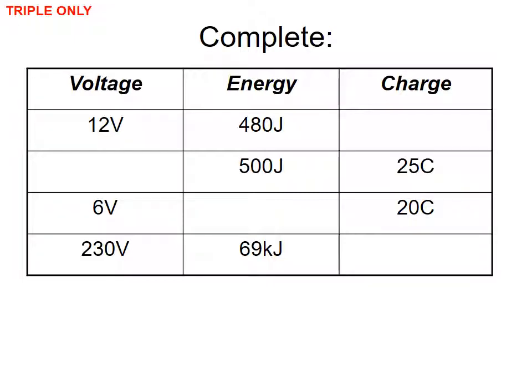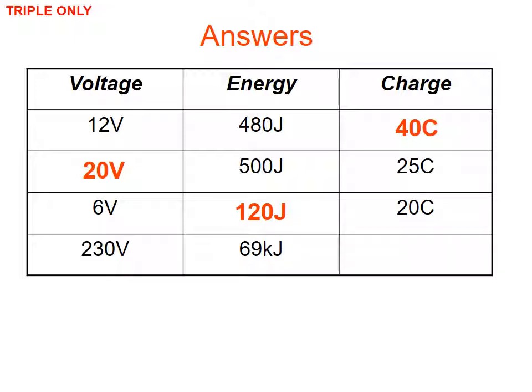Here are the table answers: 12 volts with 40 joules gives 480 ÷ 12 = 40 coulombs. 500 joules divided by 25 coulombs gives 20 volts. 6 volts: 120 joules divided by 20 coulombs. And 230 volts equals 69 kilojoules divided by 300 coulombs.